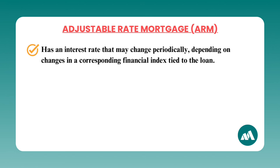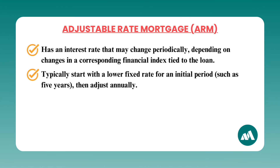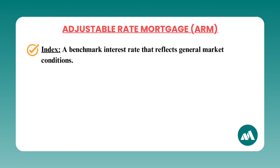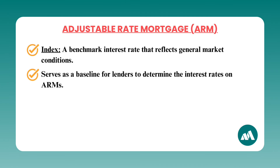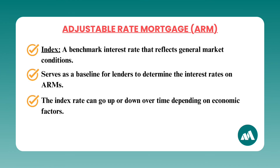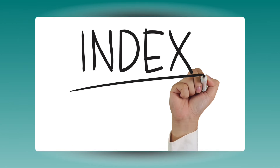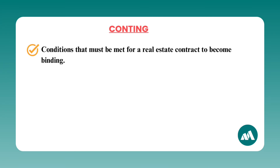Number eighteen: ARM, or adjustable rate mortgage. An ARM has an interest rate that may change periodically depending on changes in a corresponding financial index tied to the loan. ARMs typically start with a lower fixed rate for an initial period — like five years — then adjust annually. This lower initial rate can be attractive but comes with the risk of increasing rates later, leading to higher monthly payments. The key word for ARM questions on the real estate exam is index — think of it as a benchmark interest rate reflecting general market conditions.